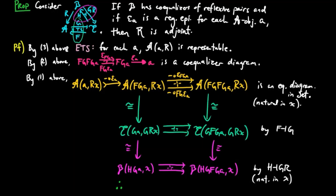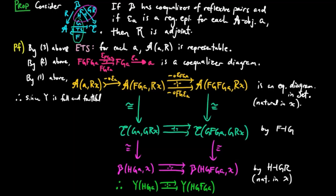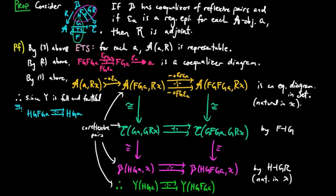Therefore there exists a unique parallel pair of representable presheaves. And thus since the Yoneda embedding is full and faithful there exists a unique parallel pair of morphisms from hgfga to hga. Then since epsilon fga and fg epsilon a is a reflexive pair in a, each one of the parallel pairs on the right is a co-reflexive pair of set morphisms, which is the dual concept of reflexive pair. Therefore by invoking the Yoneda embedding again we see that the blue parallel pair is a reflexive pair of morphisms.